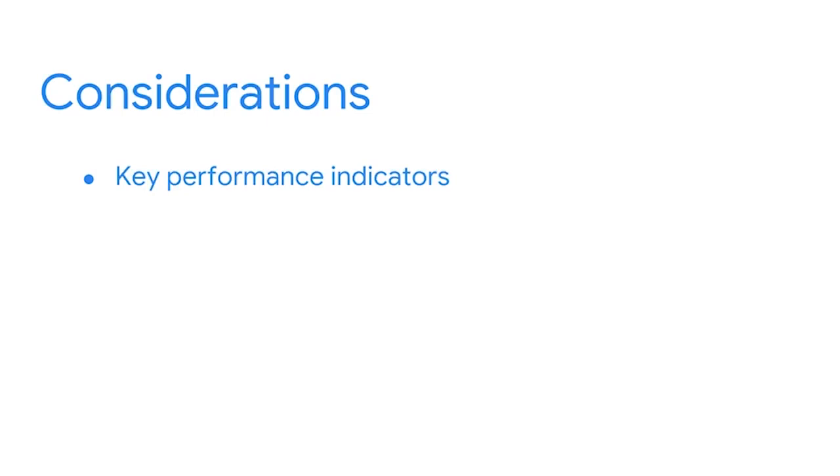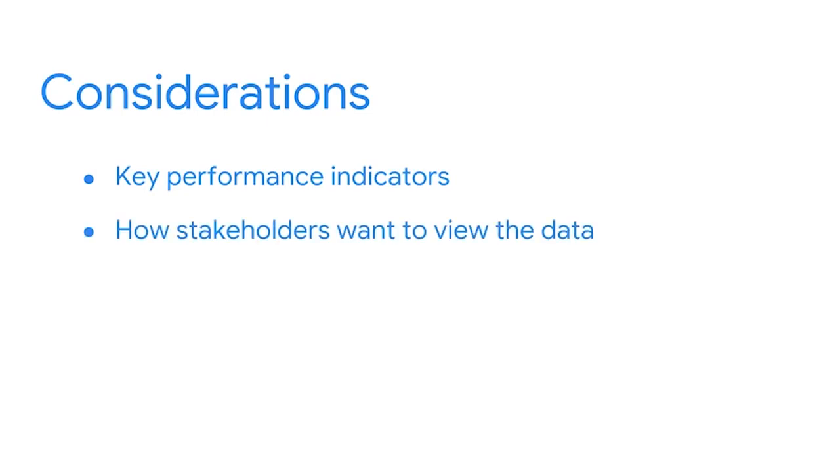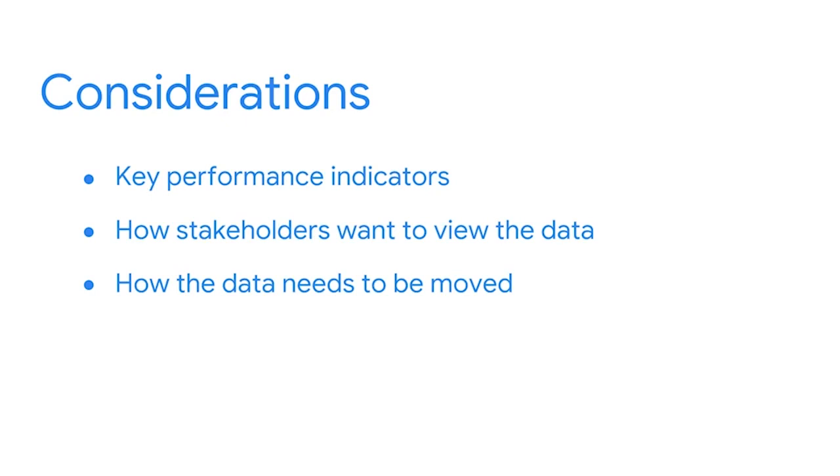If you're choosing the tools yourself, you'll want to consider the KPIs, how your stakeholders want to view the data, and how the data needs to be moved. A KPI is a quantifiable value closely linked to the business strategy, used to track progress toward a goal. KPIs let us know whether or not we're succeeding so that we can adjust our processes to better reach objectives. For example, some financial KPIs are gross profit margin, net profit margin, and return on assets. Some HR KPIs are rate of promotion and employee satisfaction.